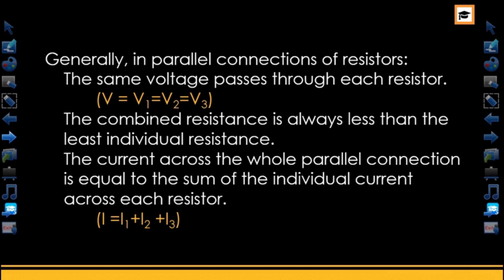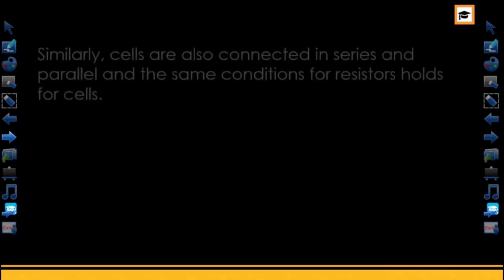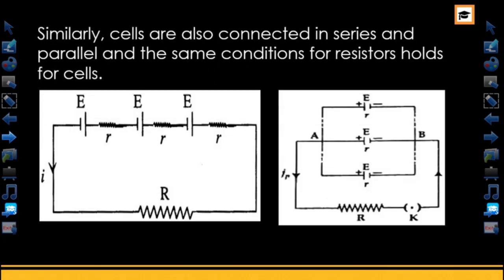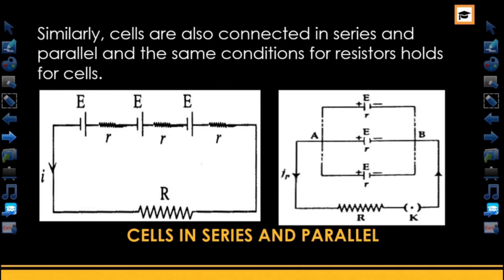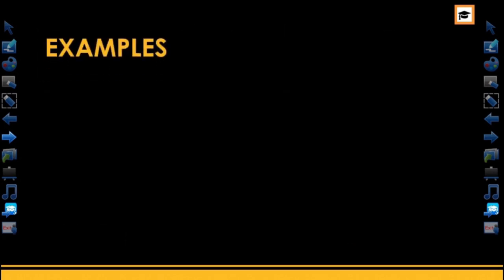Now let's take a look at the concept of cells. A cell means battery. Just like resistors, cells can also be arranged in series and in parallel. In series connection, cells are connected end to end, while in parallel, cells are arranged side by side. We've now discussed the various terms in current electricity and will take a look at examples.